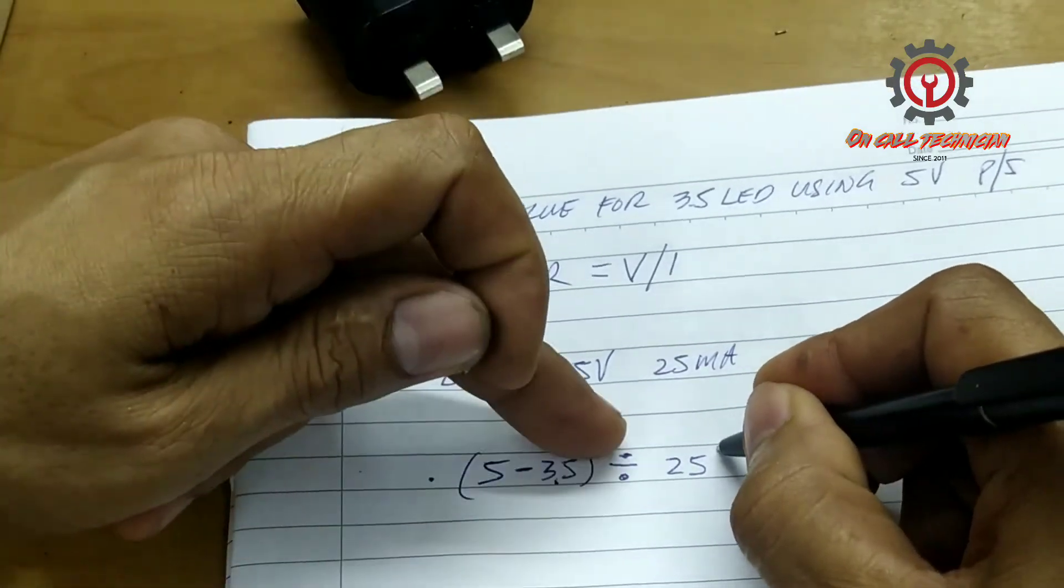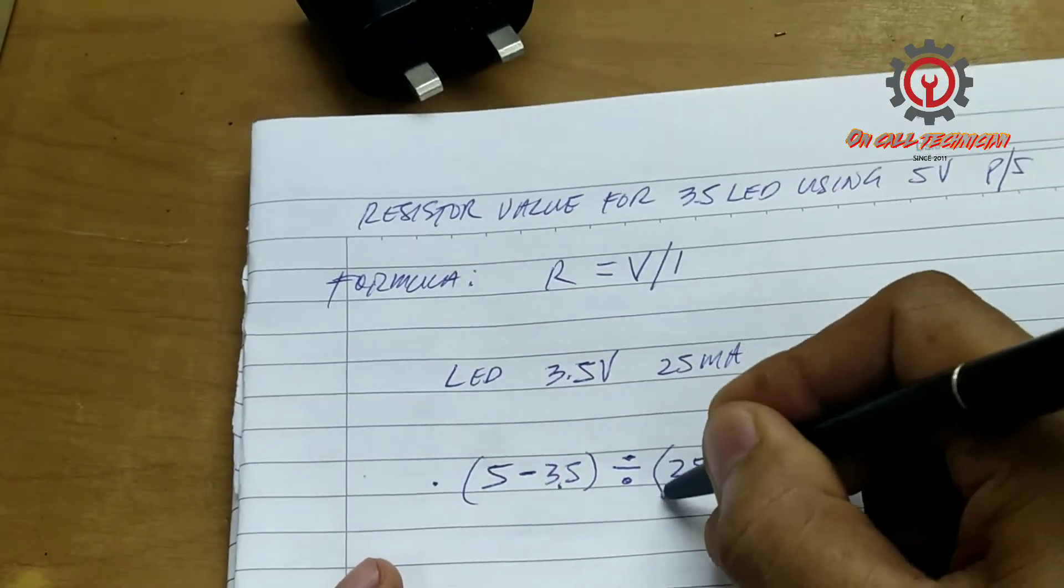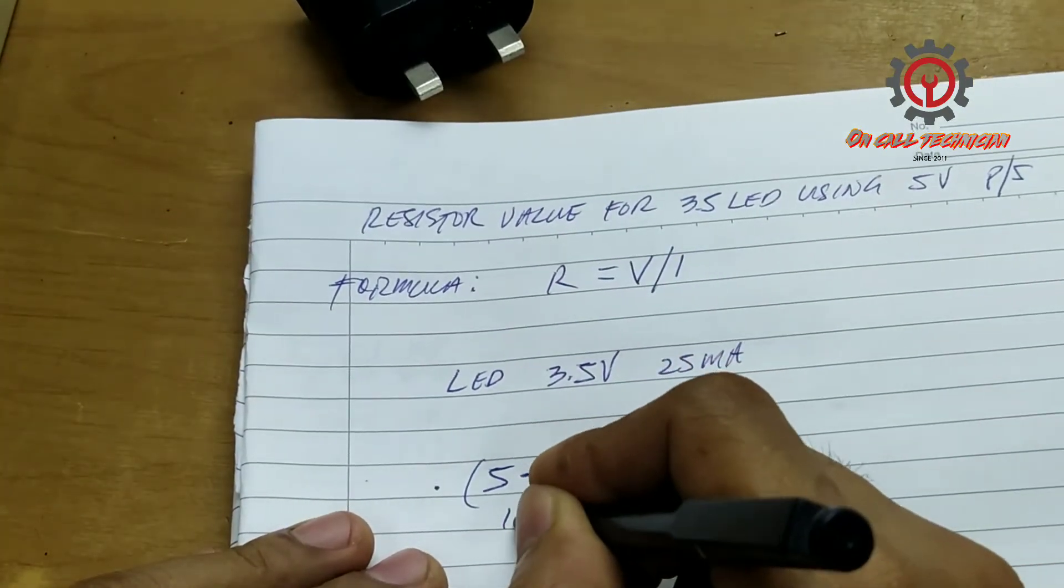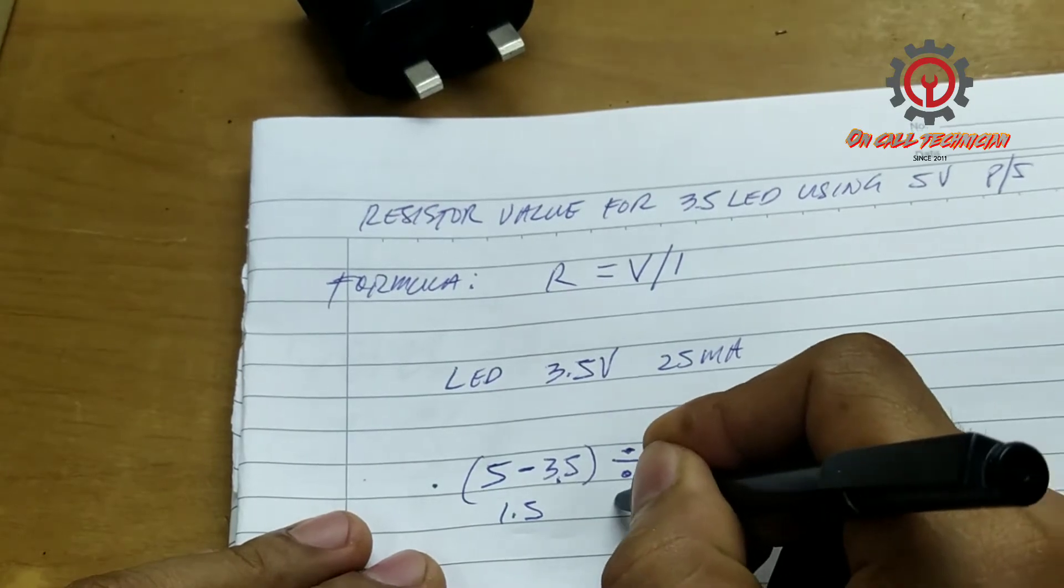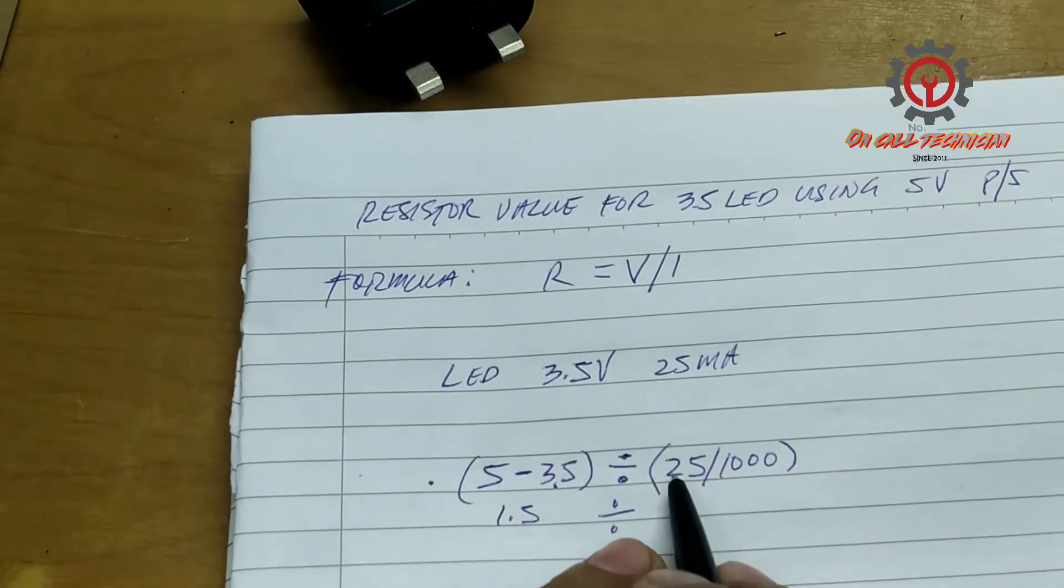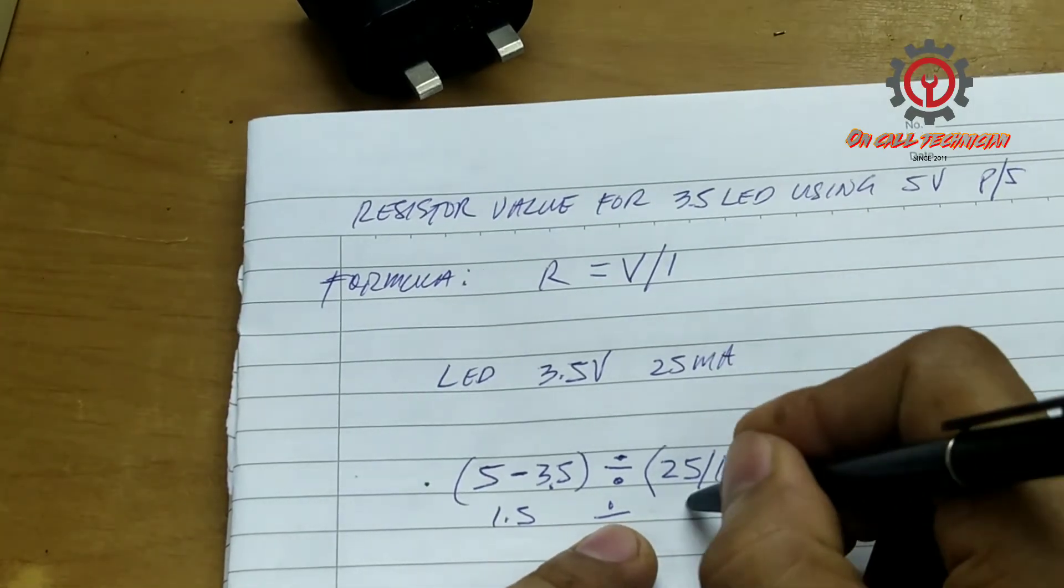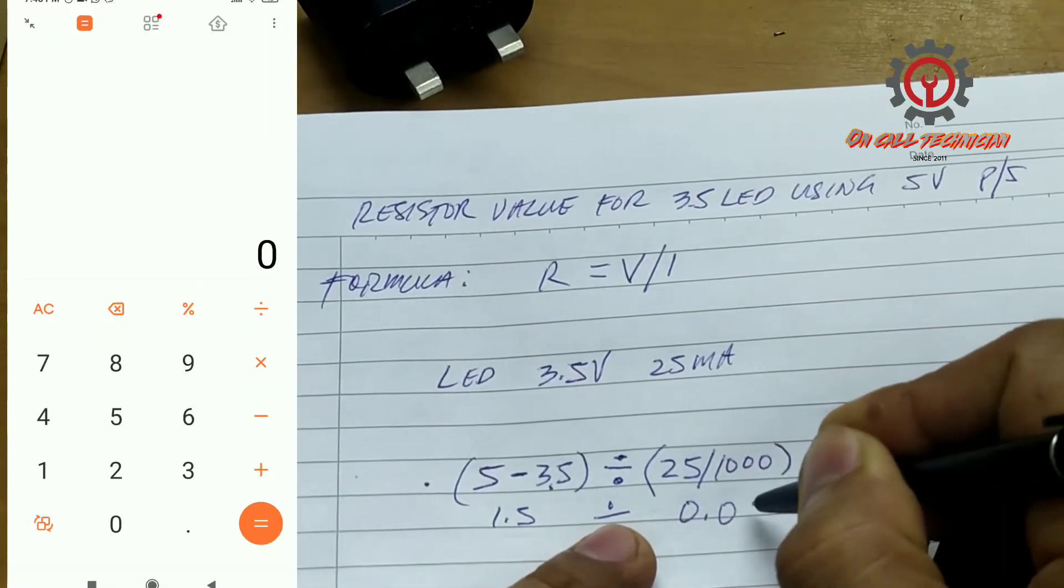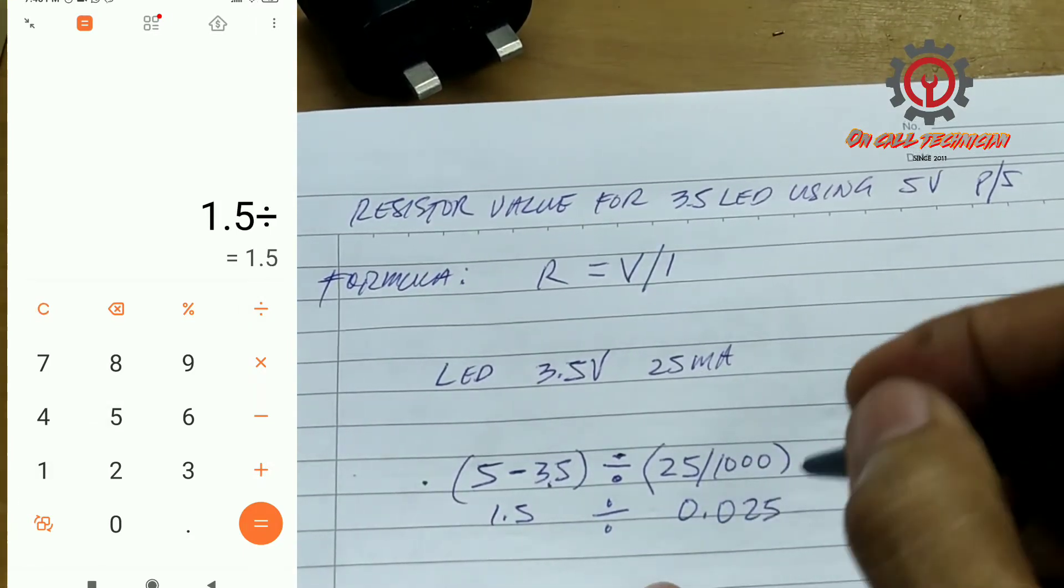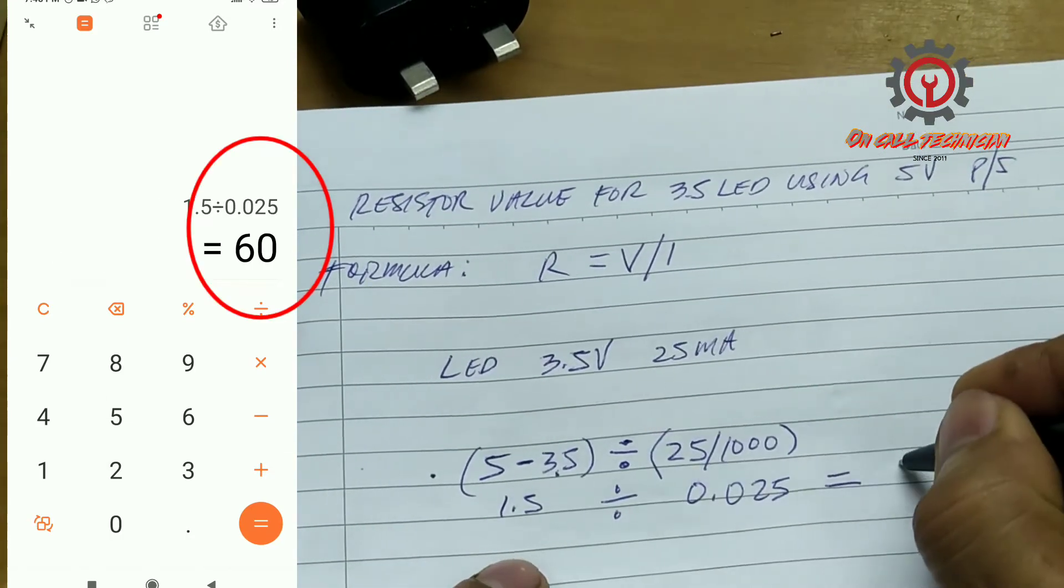We're gonna divide this by 1000 to become ampere. And the result is 1.5 divided by 0.025 ampere. Here milliamps now become ampere, and then the result is 60.